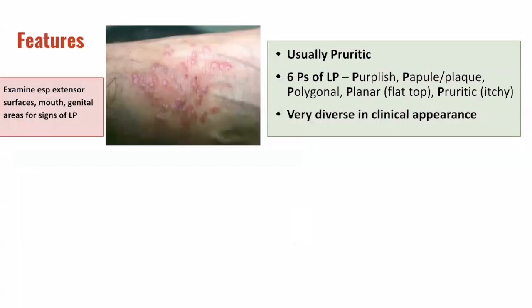One of the clinical features of lichen planus is known as the six P's of LP. The six P's stand for purplish, papule or plaque, polygonal, planar, and pruritic. These describe six key features of lichen planus.